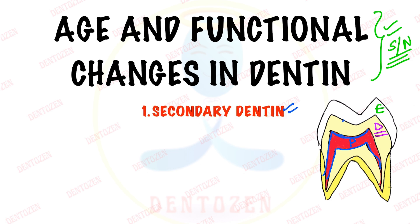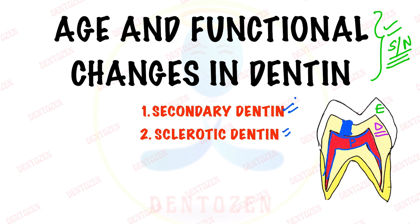Another change happening in dentine is that the dentinal tubules get completely filled with collagen fibers and minerals — they get completely obliterated and occluded. This type of dentine is called sclerotic dentine. These two are the major changes happening in dentine with advancing age to meet functional demands, that is to protect the pulp by forming a physical barrier.